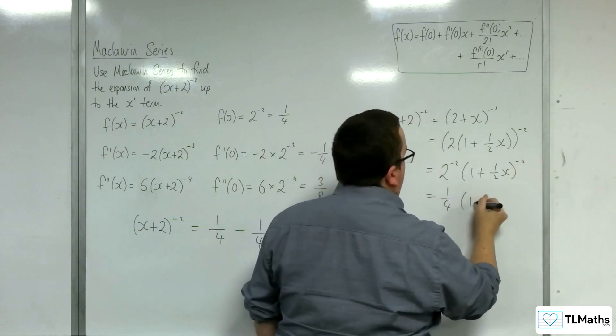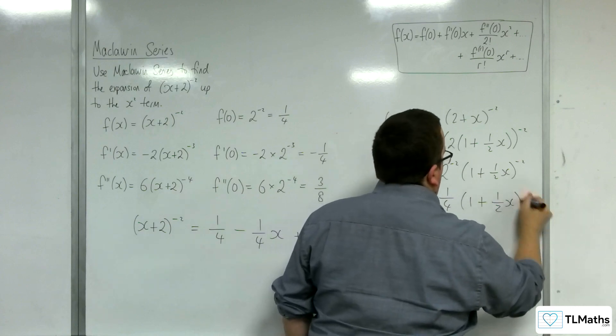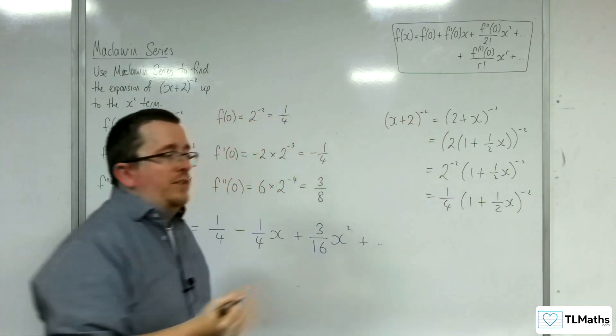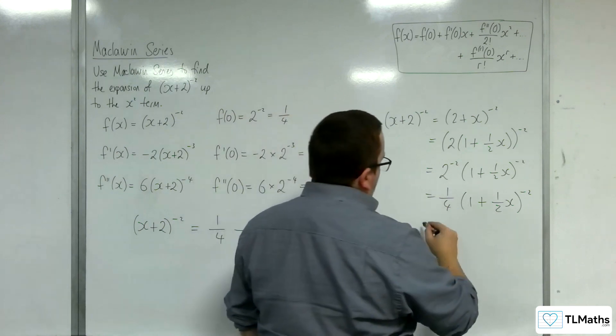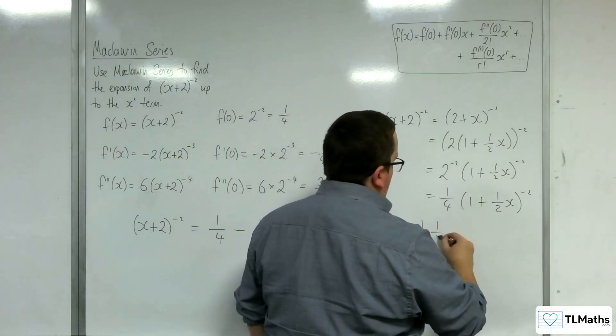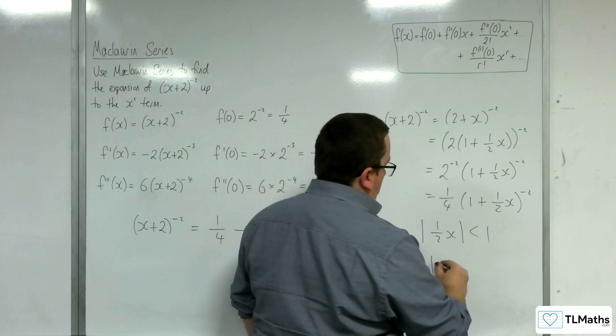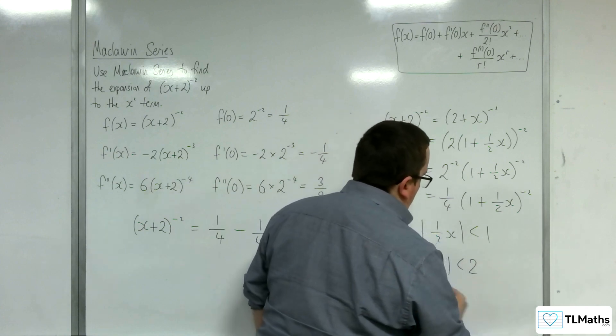Now, if you want to write that as a quarter, then you can, like that. So this is going to be valid for modulus of 1/2 x is less than 1. So |x| < 2.